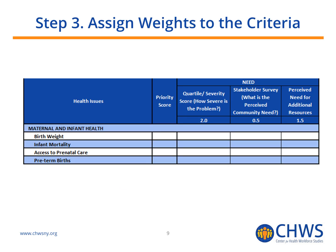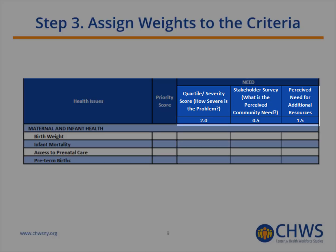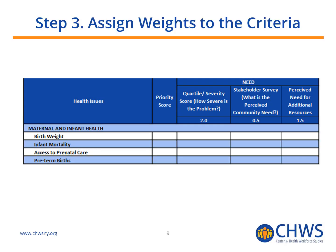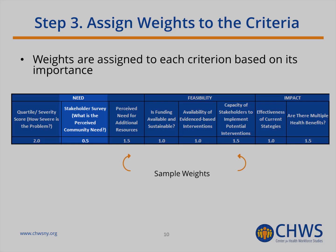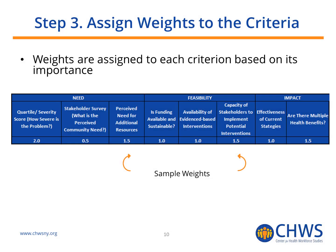Step 3 is to assign weights to the criteria. Weights are based on a numerical scale — in this case 0.5, 1, and 2 — and should represent the relative importance of each criterion. In this example, the Stakeholder Survey criteria, weighted at 0.5, was the least important, while the quartile severity score, with a weight of 2, was the most important. As you decide the weights, consider both the number of weight categories and the range between the lowest and highest weight, as this will ultimately impact how close or distant your aggregate scores are.